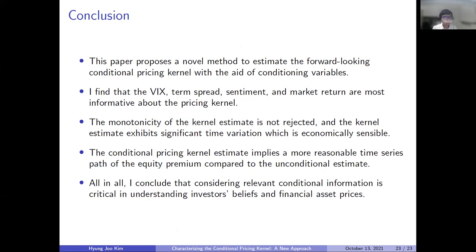To conclude: in this paper, I propose a novel method to estimate the forward-looking conditional pricing kernel by incorporating conditioning variables. I find that the VIX, term spread, sentiment, and market return are most informative about the pricing kernel. The pricing kernel estimates exhibit significant time variation, and this time variation is economically sensible. The conditional equity premium inferred from the conditional empirical pricing kernel shows a more reasonable time-series path compared to the unconditional pricing kernel estimate. I conclude that considering relevant conditional information is important in asset pricing.